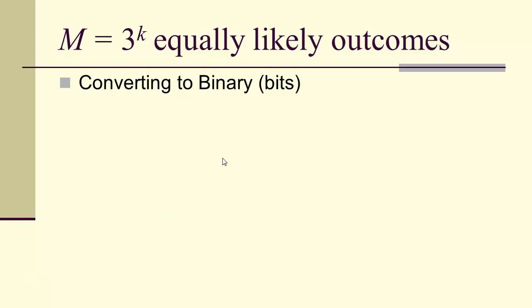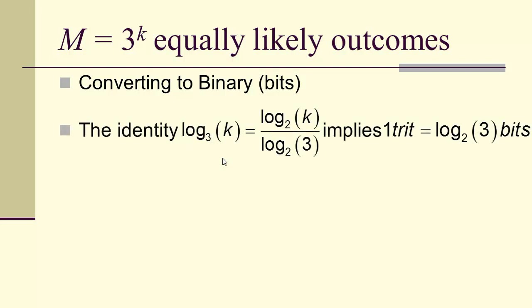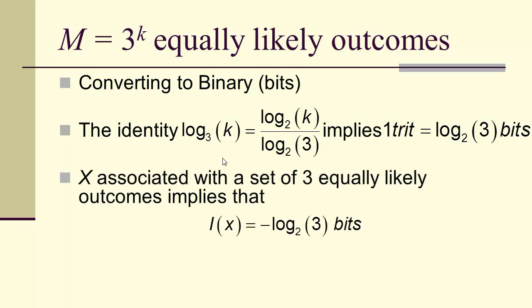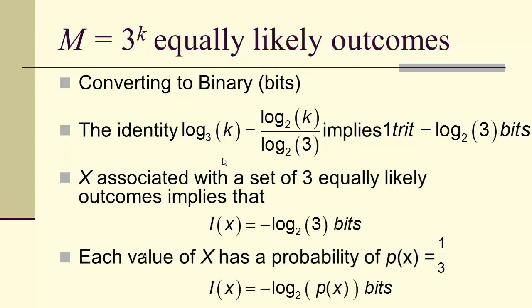If there are M = 3^k equally likely outcomes, we can convert trits to binary bits using the identity: log base 3 of k = log base 2 of k divided by log base 2 of 3. Therefore one trit equals log base 2 of 3 bits. If each value of x has probability 1/3, then the self-information is the negative log base 2 of the probability — just as we saw before.